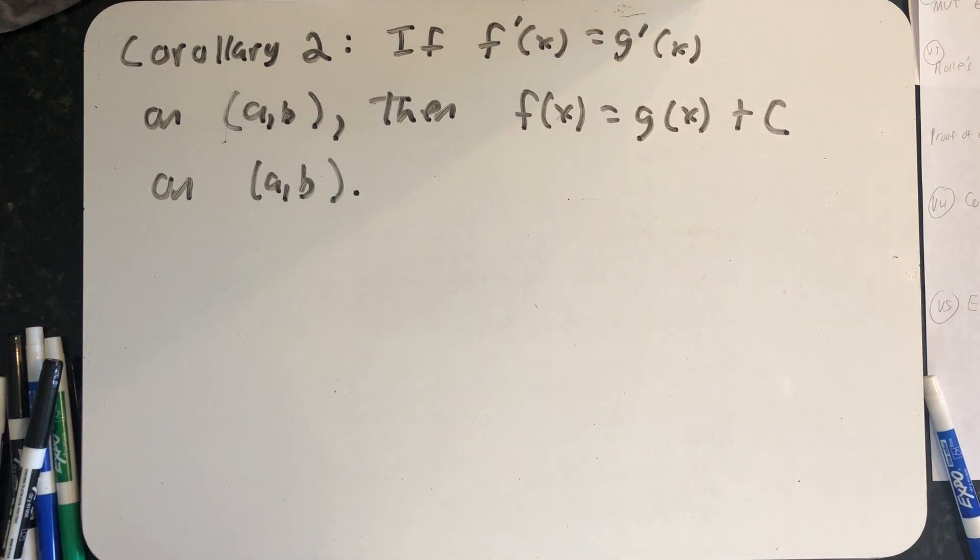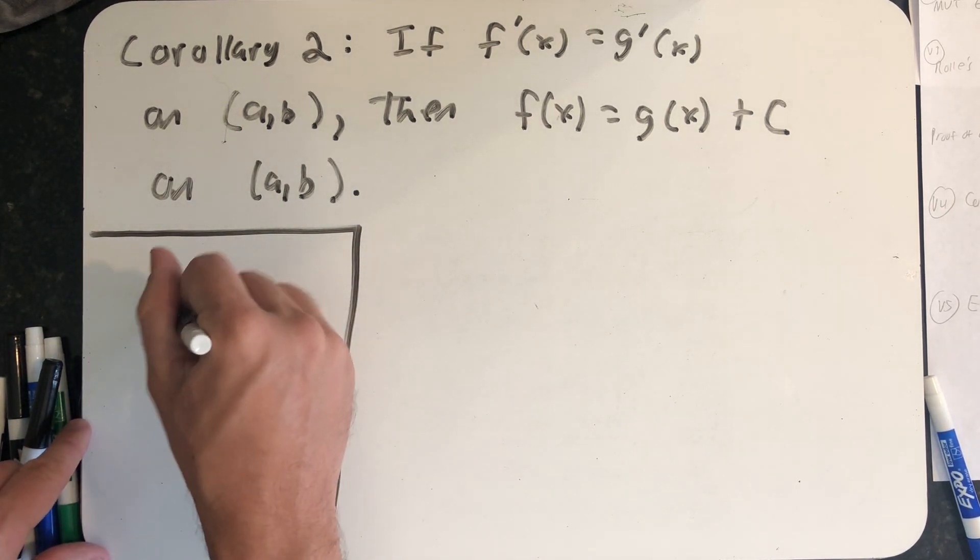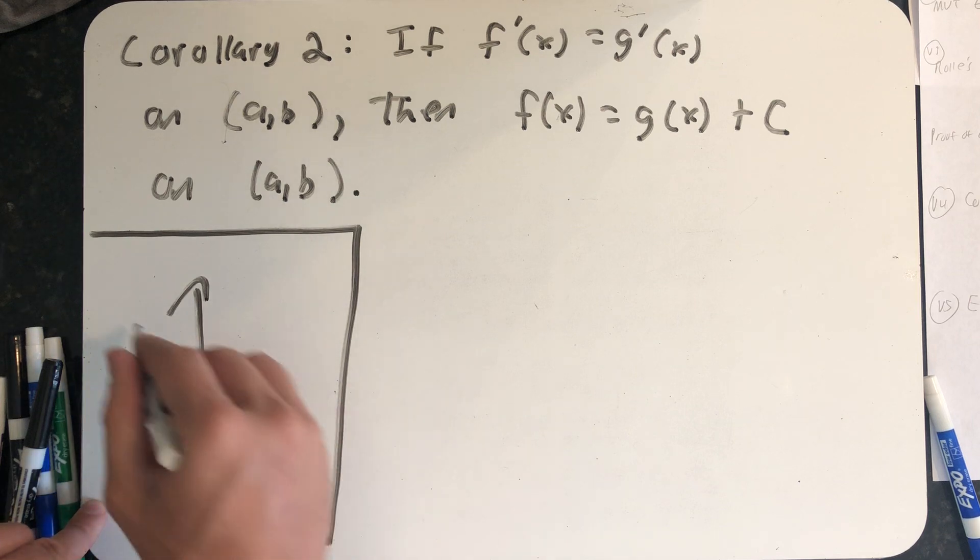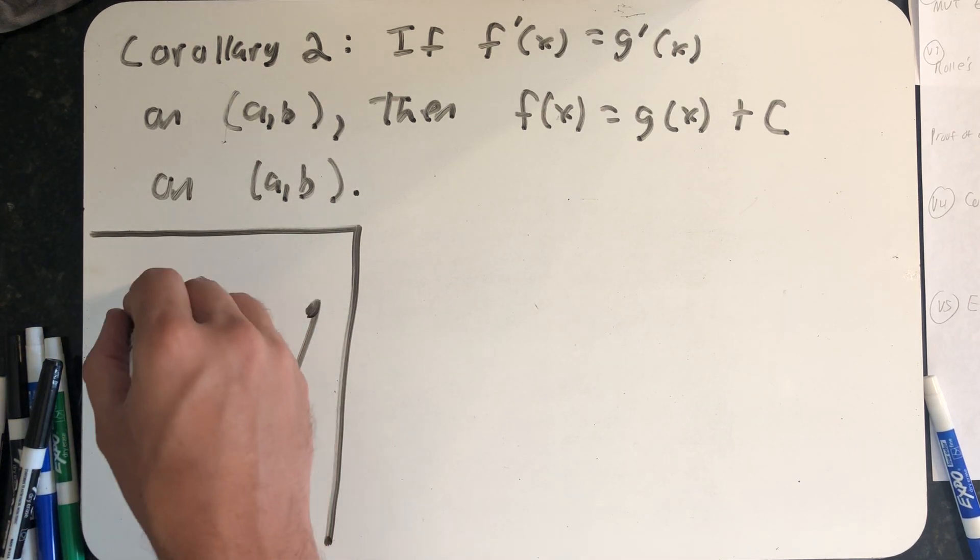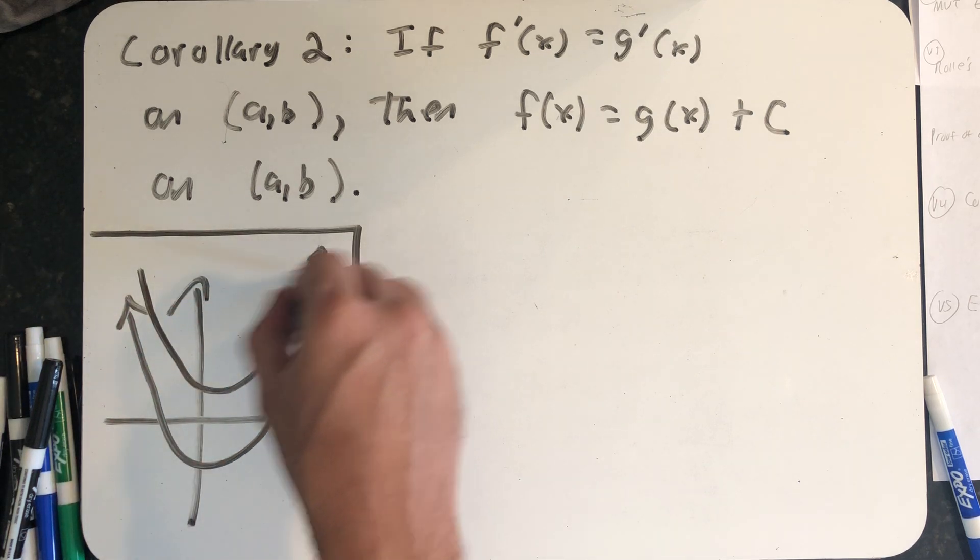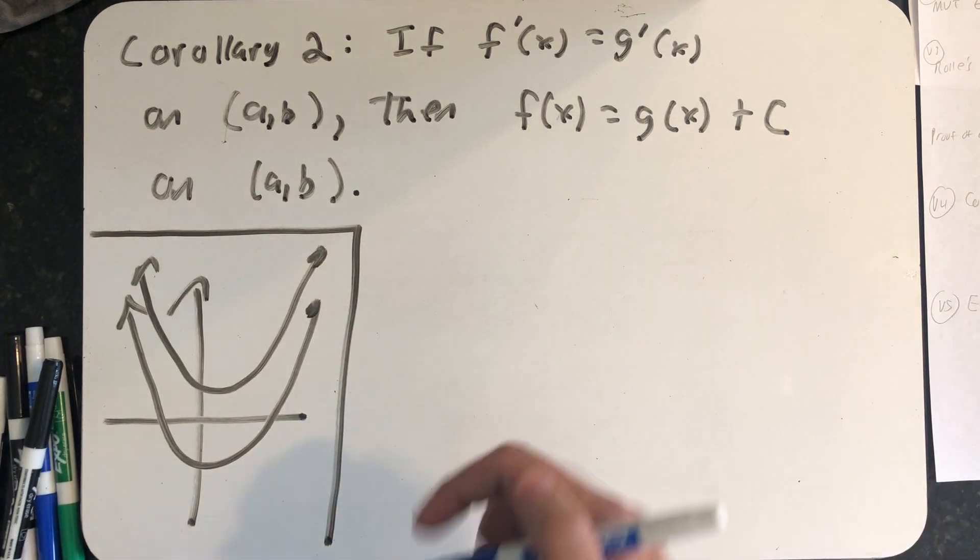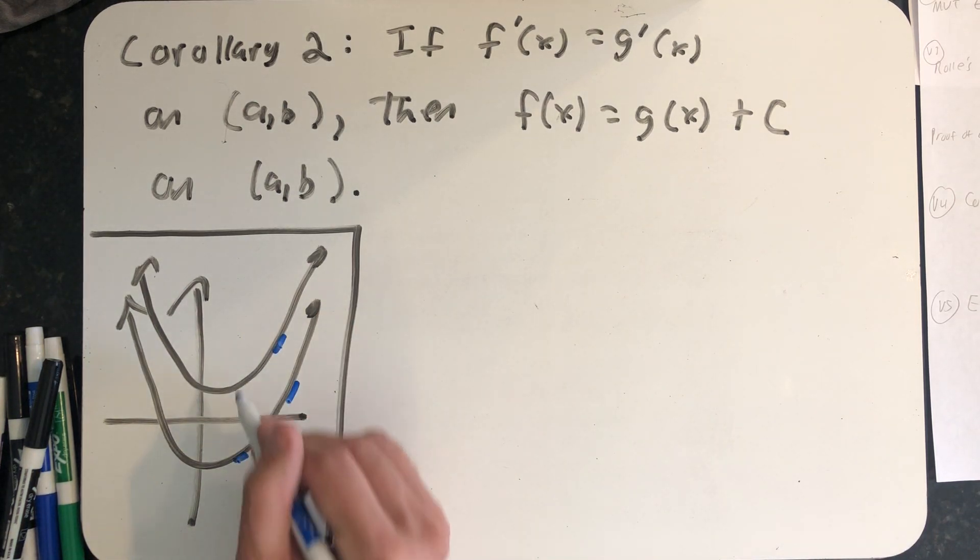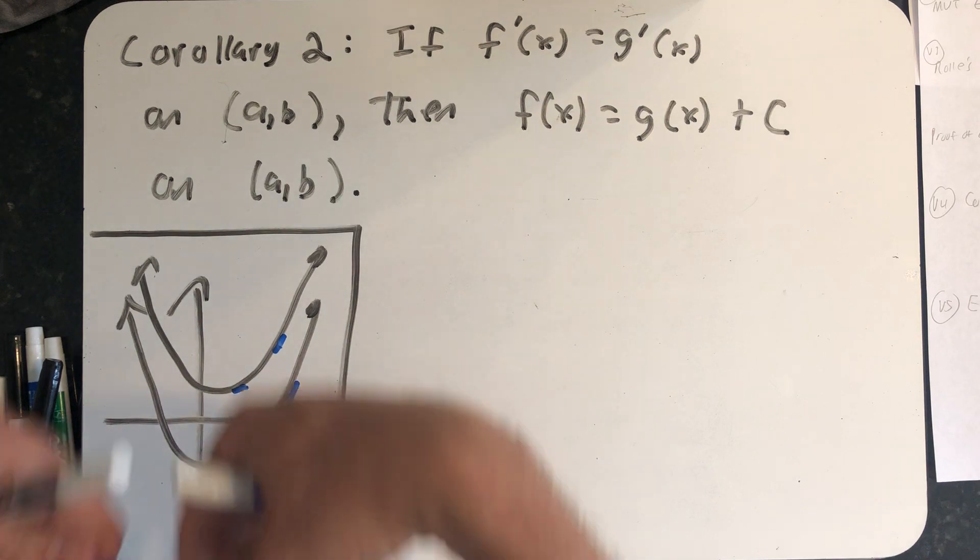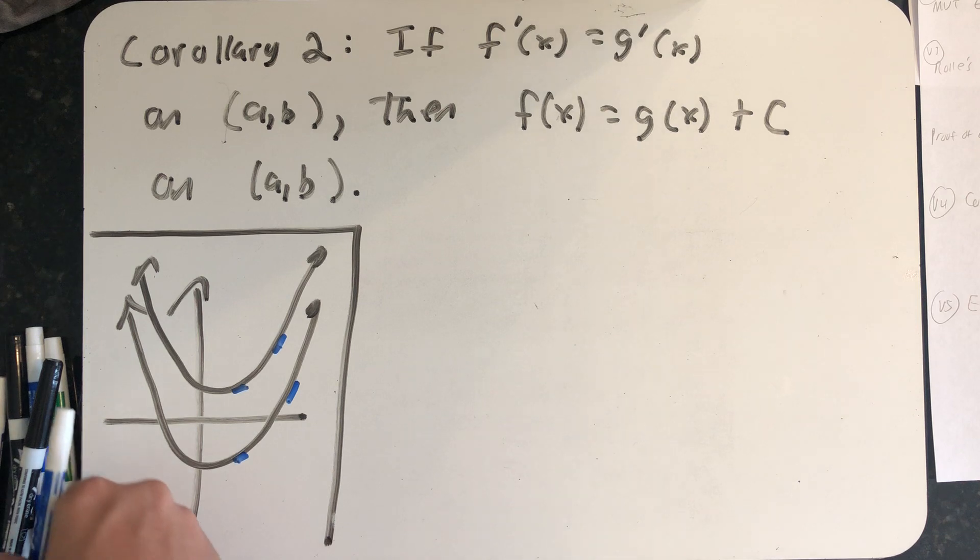The way I want to think about this intuitively, then we'll prove it formally, is that if I draw a function and then I shift it upwards by adding a constant to it or shift it downwards by making c a negative, I won't have changed the slope of the tangent lines. They would have just been either moved up or moved down, meaning the derivatives were the same.